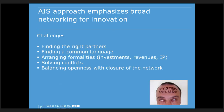The AIS approach emphasizes broad networking for innovation, which is not easy. You need to find the right partners, a common language, and a common goal. Innovation always starts with a vision - you need to know where you want to go, especially when a system has reached its limits in productivity or environmental impact. You may need to change your vision and reconfigure the whole system. Finding a common vision and the right network configuration for change is challenging.